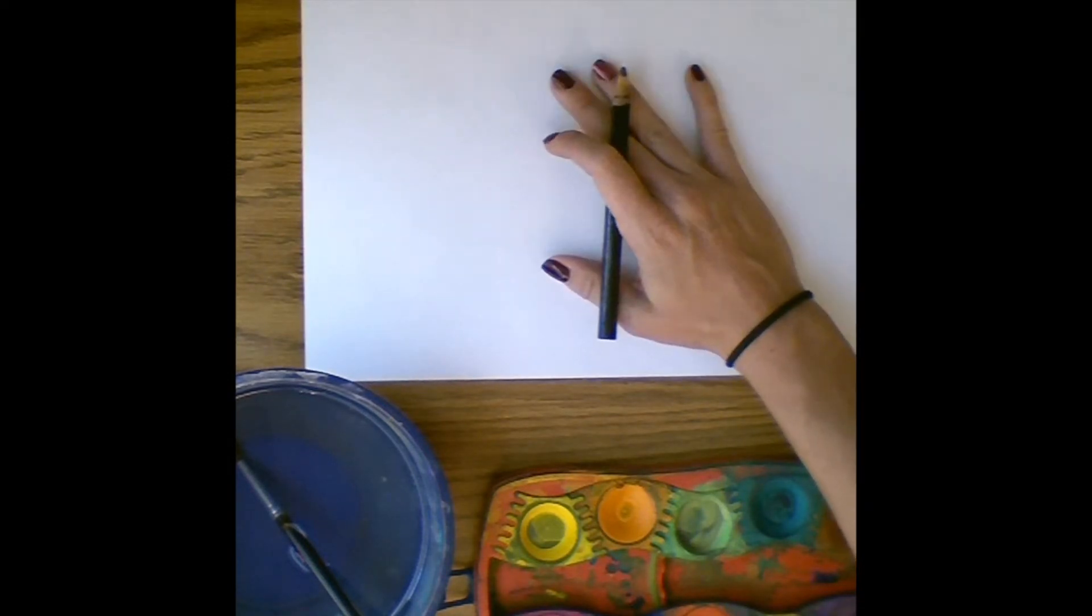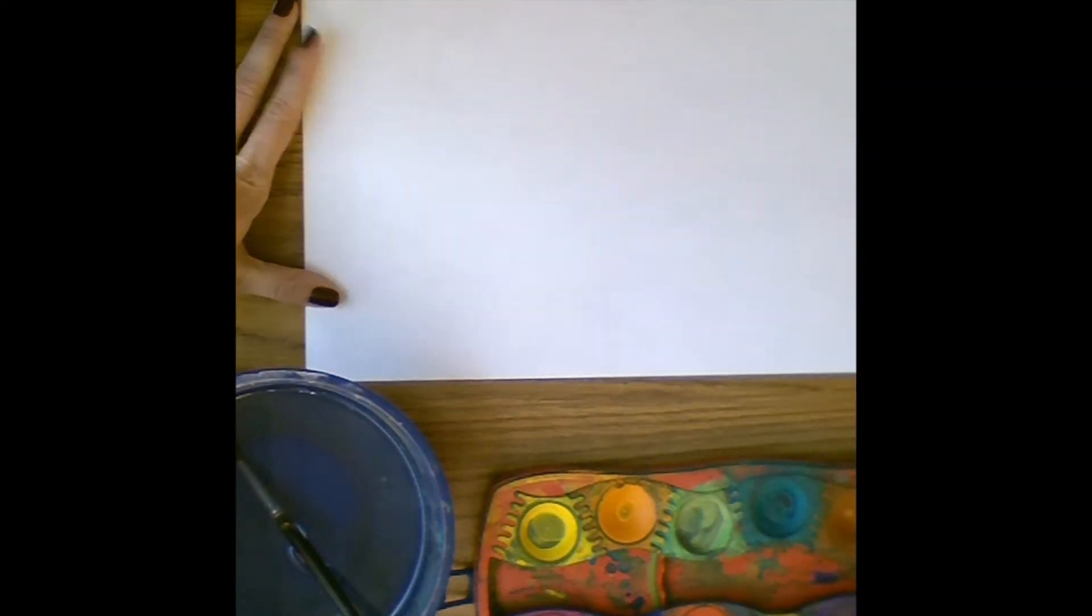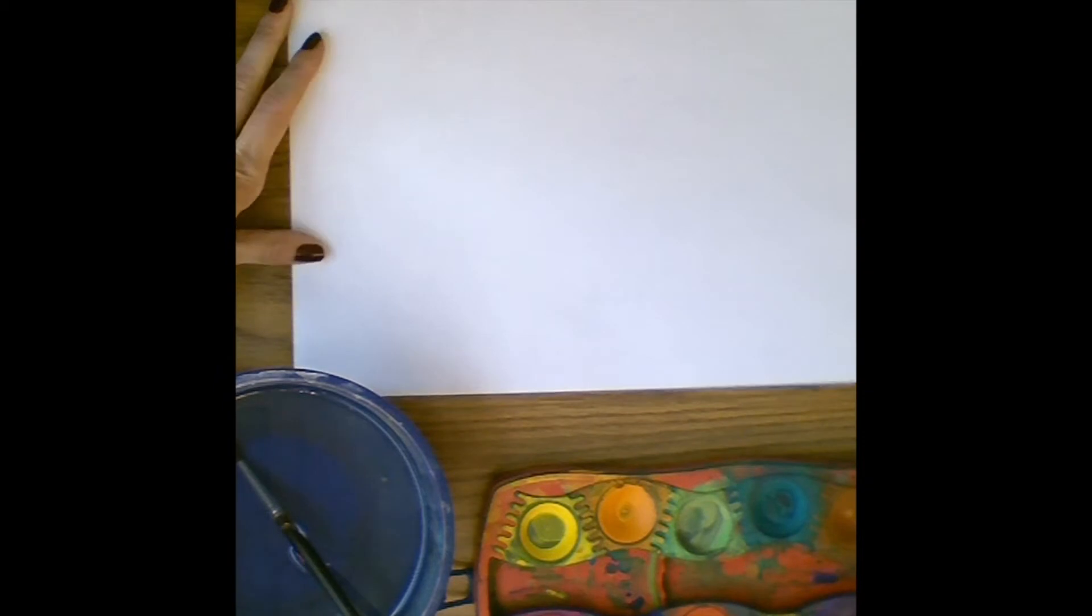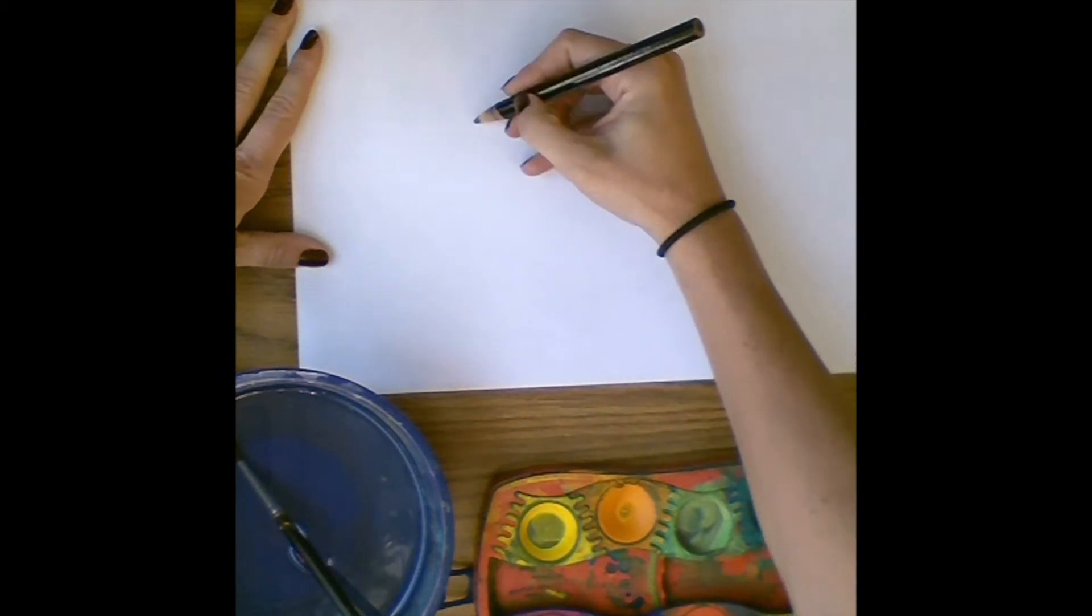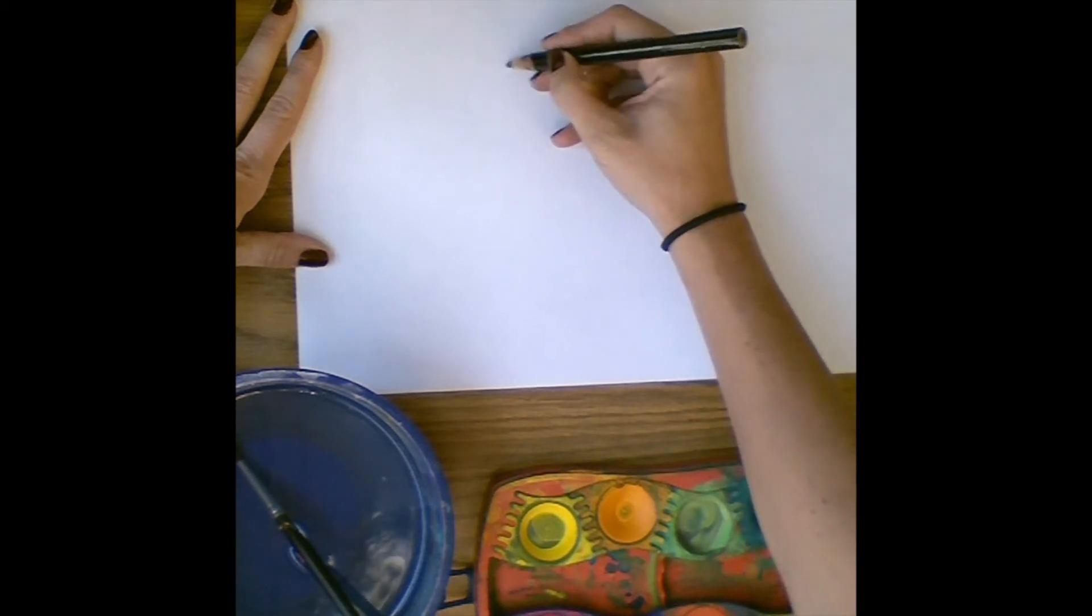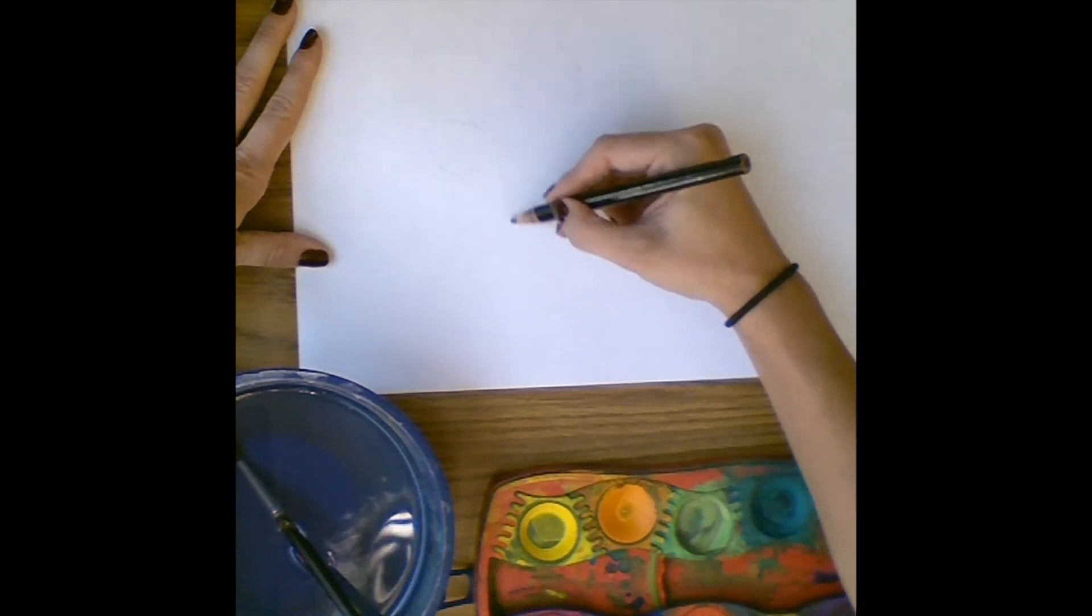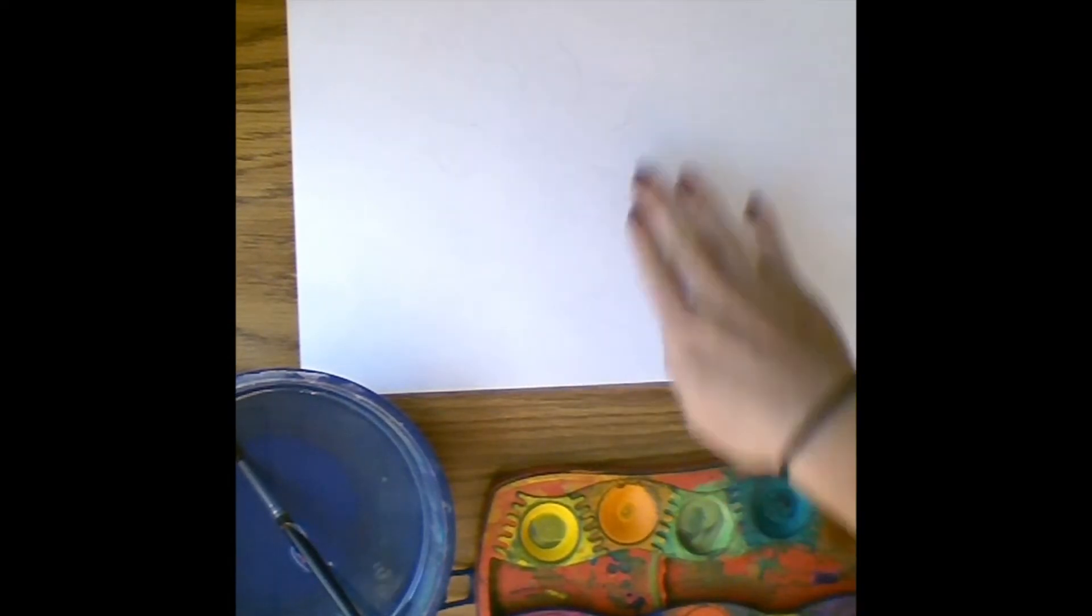I'm going to start by sketching very softly on my paper. It's going to be so soft that you might not even be able to see it on the screen, but I can see it so I know where to put my water. I'm going to be doing a flower today.